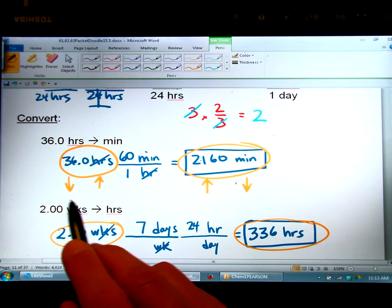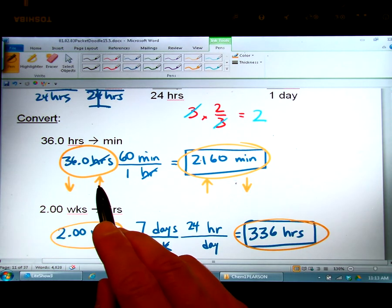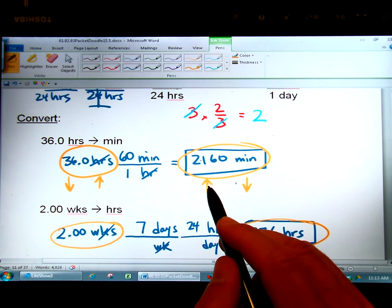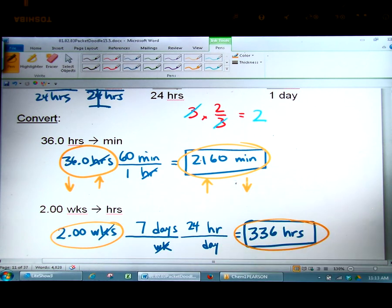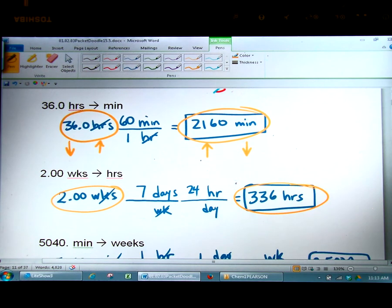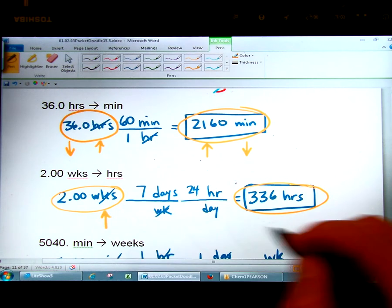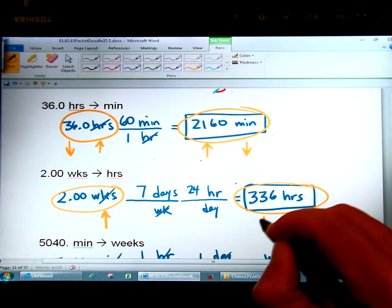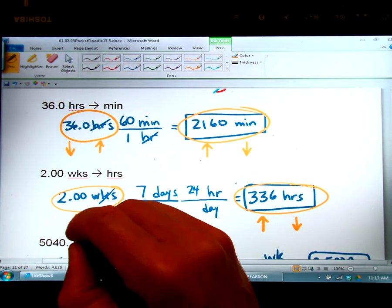So when you have a small number, you'll have a larger unit. And when you have a large number, you'll have a smaller unit in the equality. Again, weeks is a large unit compared to hours, but 336 is a large number compared to two.